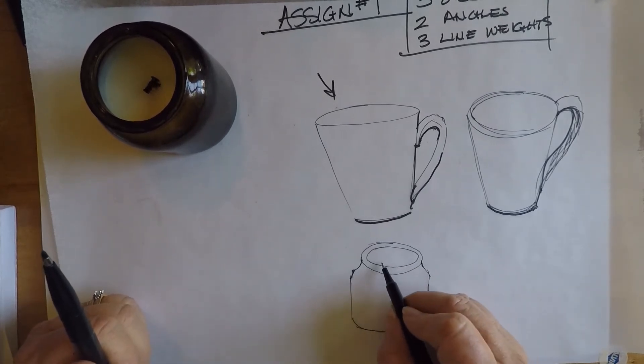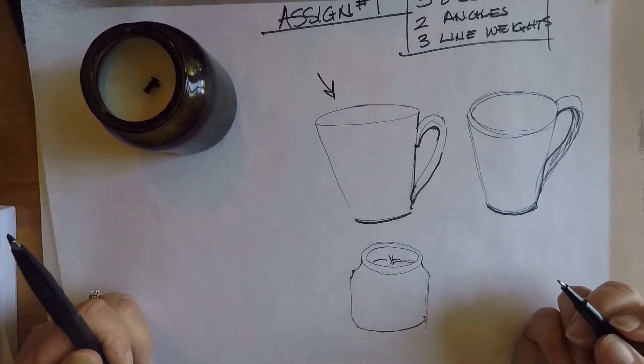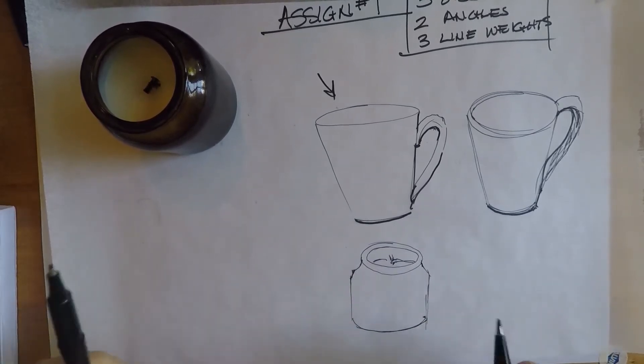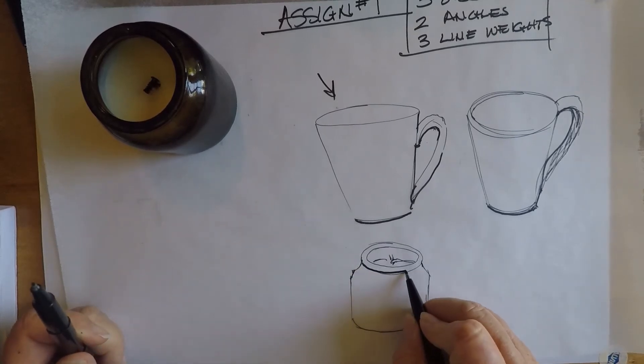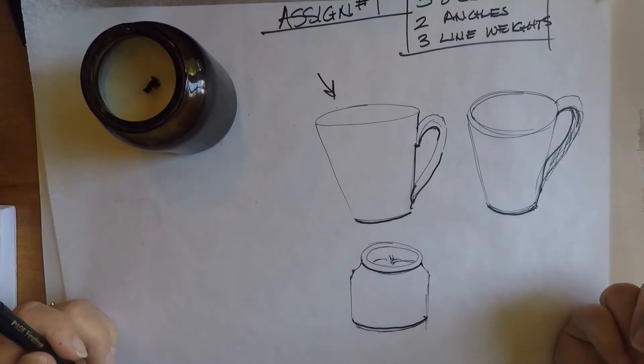And then I'm going to kind of imply the candle wick down in here so we get an idea what it is. Okay, so now I'm going to add a heavier line weight underneath the rim of the lip and at the base of the candle.